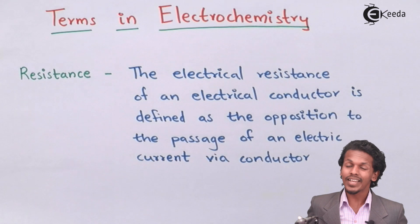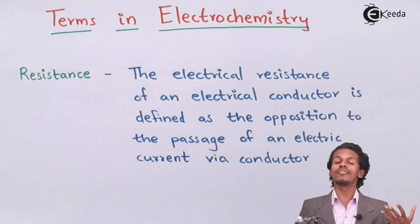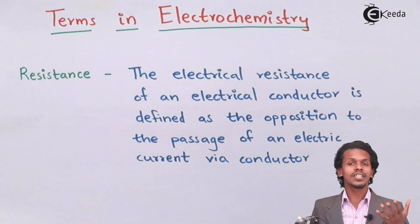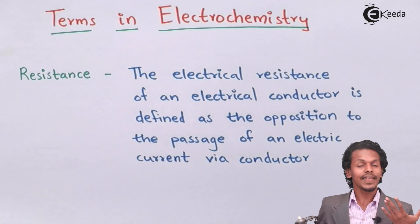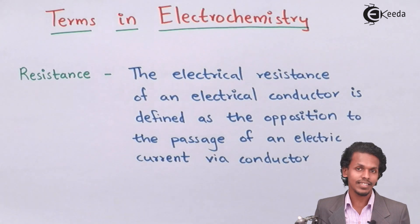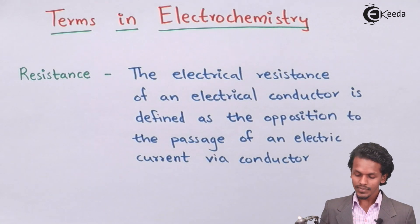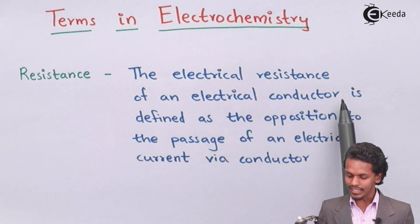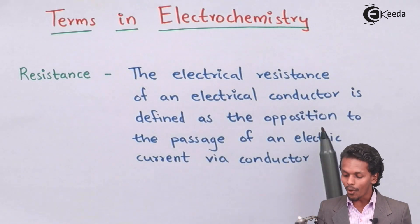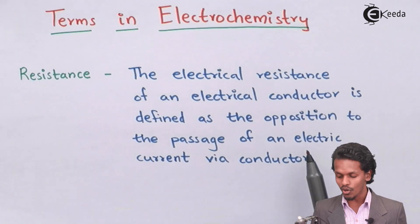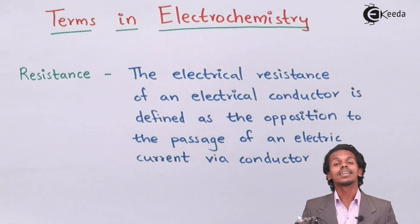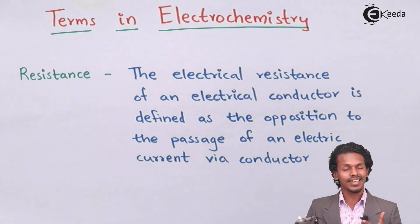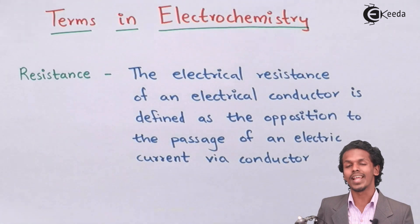First, let us talk about resistance. Resistance is the main factor because of which electricity is measured. It is a physical property, but now we are going to study it in chemistry. The electrical resistance of an electrical conductor is defined as the opposition to the passage of electric current through the conductor.